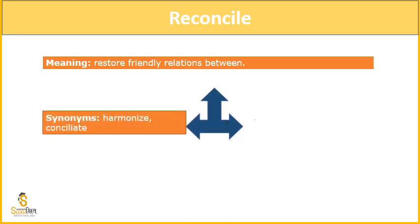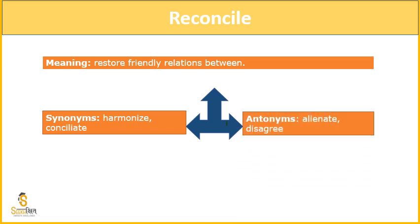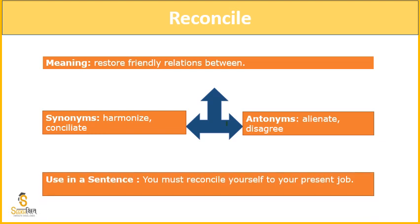Let's see synonyms and antonyms for reconcile. Synonyms are 'harmonize' and 'conciliate' — conciliate means to calm someone who is angry. The antonyms are 'alienate' and 'disagree.' Alienate means to make any person — like a nation or an individual — feel like an outsider, not a part of something bigger. To disagree means they are not agreeing on a point.